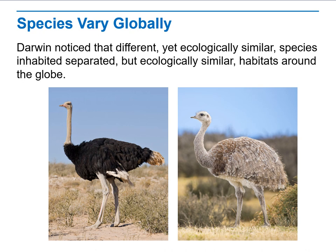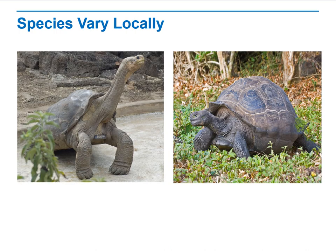Darwin noticed that different yet ecologically similar species inhabited separate but ecologically similar environments. That means the habitats around them globally are different, but as a species you can see they share the same characteristics with different environmental effects — differing due to the variety of geographical places where they are coming from.